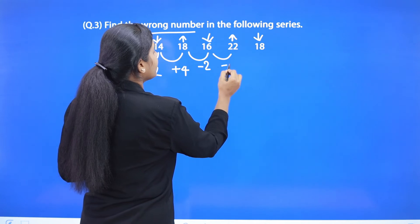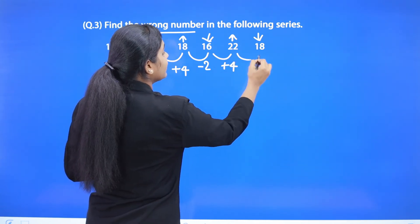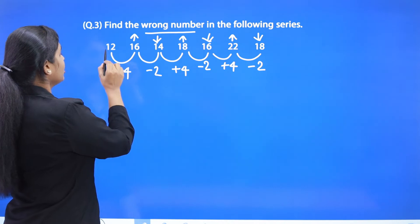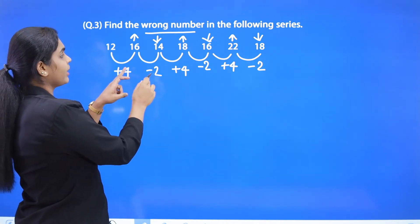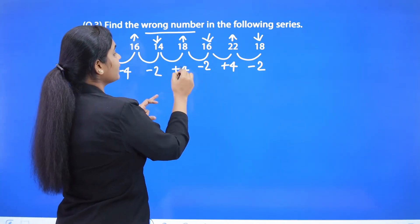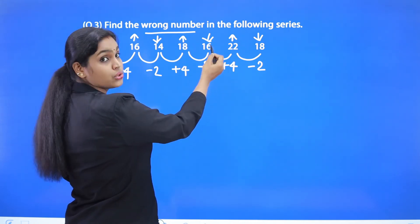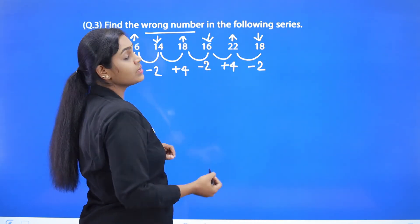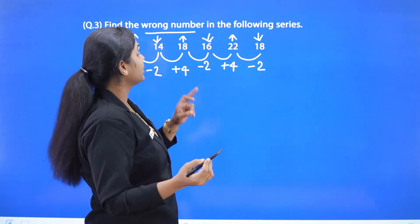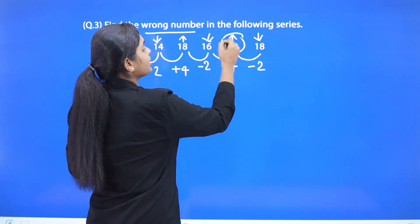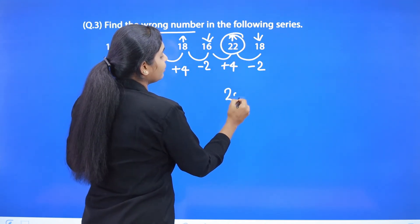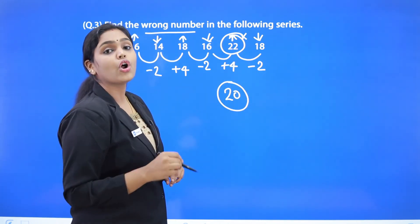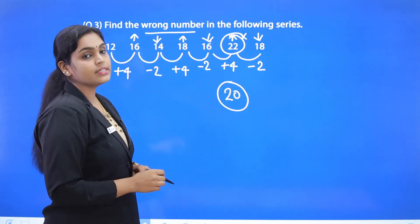Continuing the pattern: after 16, we apply plus 4, which gives 20. But 22 is given in the series. So the actual value should be 20, which means 22 is the wrong number in this series.